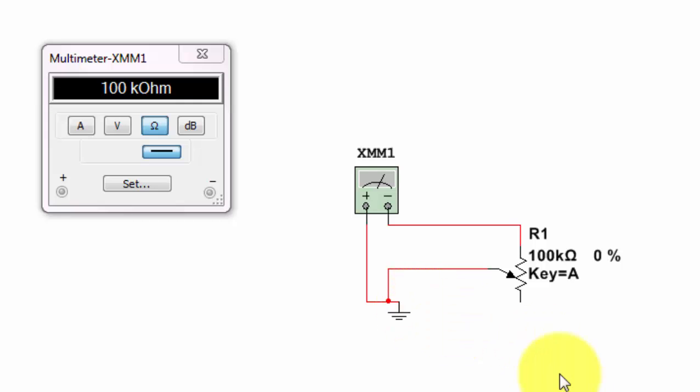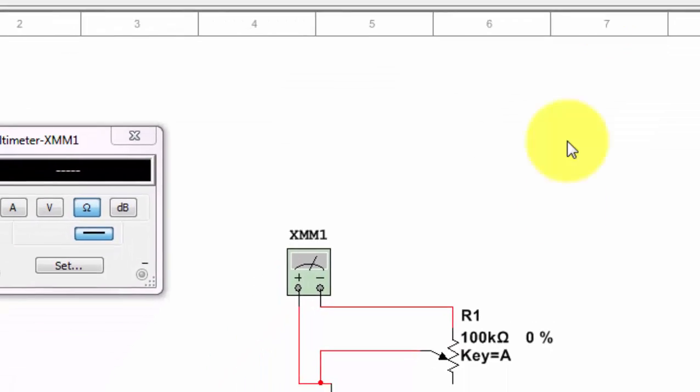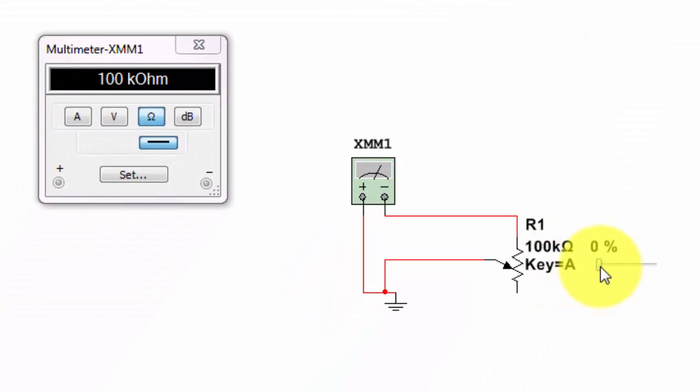All right, and again we have the slider arm. I'm going to run the simulation and right now it reads 100k on this side, the left side of the slide. And then as I vary, we could see I can start decreasing it.